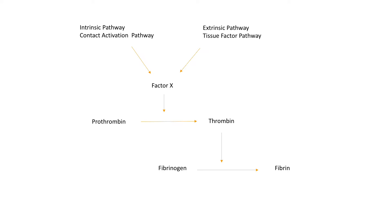Once factor 10 is inhibited, it will not be available for conversion of prothrombin to thrombin. Thrombin will also not be available for its positive feedback effects on upstream clotting factors and its effects on platelets.